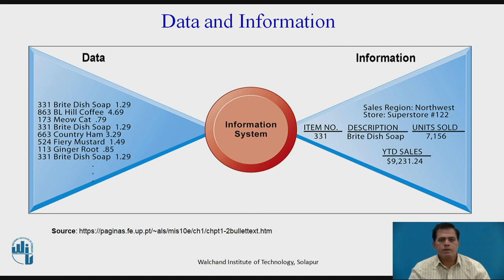When the server collects this raw data, it processes it through an information system and gives meaningful information to the administrator. On the right-hand side, the meaningful information shows the item number, their description, units sold, and their date.